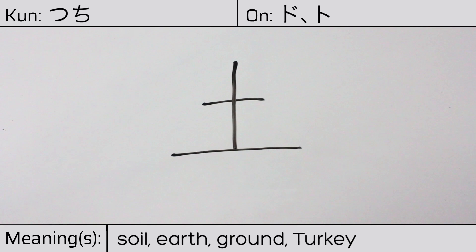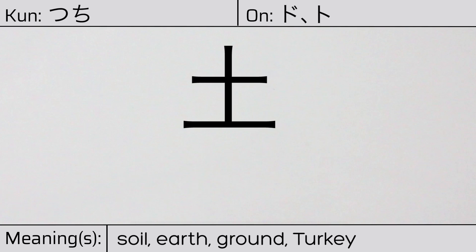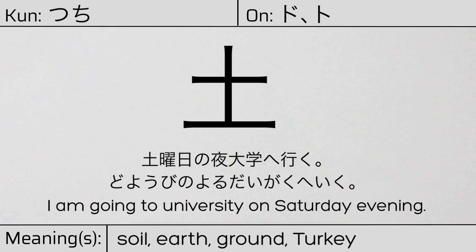This character doesn't have any radicals, but is itself a radical in other composite kanji. You can remember this kanji by thinking of it as a flower growing out of the ground. Our example sentence is: 土曜日の夜、大学へ行く — I am going to university on Saturday evening.